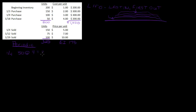That's $200. Those units are gone. I still need 100 units left for that sale, so I'm going to take 100 units from the next group — 100 units times $3 — and that's $300. Now that sale is done and those units are gone too.